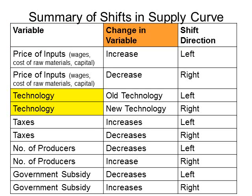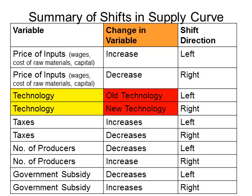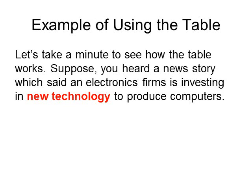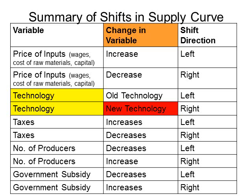Next, we need to look at the second column to see what happens to the variable. Under the change-in-variable column for technology, we have a choice between new technology and old technology. The problem tells us the firm is investing in new technology, so we select the new technology entry. The old technology entry is not relevant to this case. We then look to the third column — the shift direction — and see that the supply curve shifts to the right.